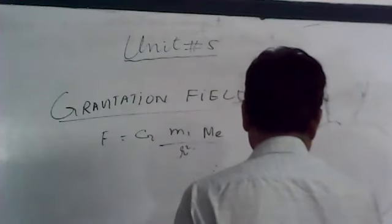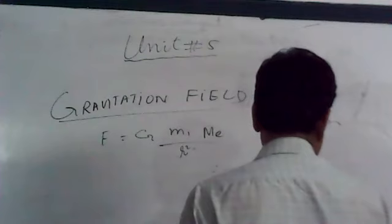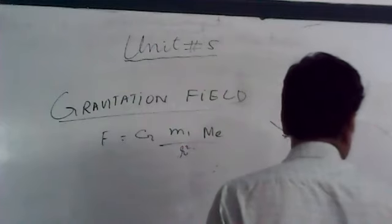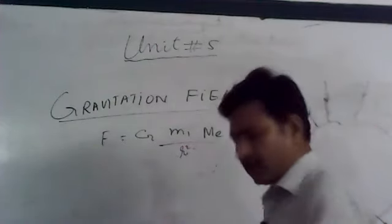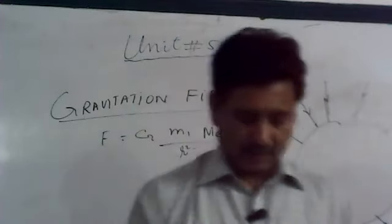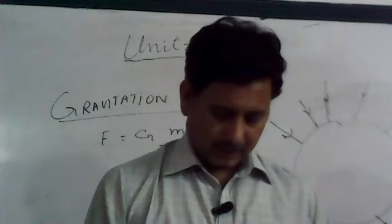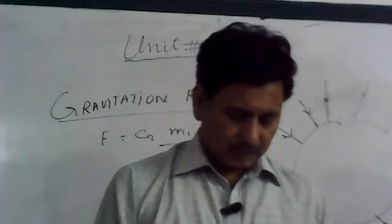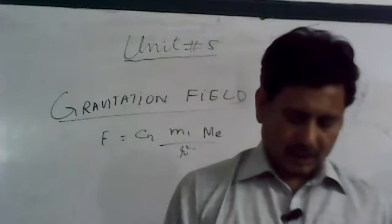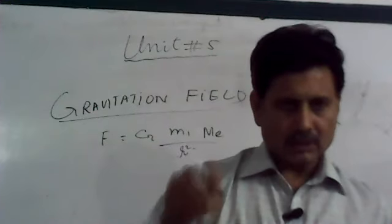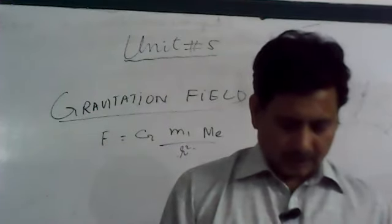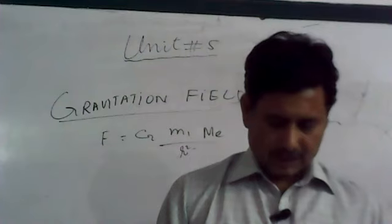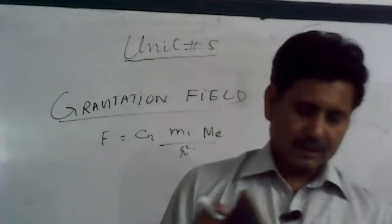The gravitational field exists all around the Earth and the field direction is towards the Earth. The gravitational field strength is defined as the gravitational force per unit mass.